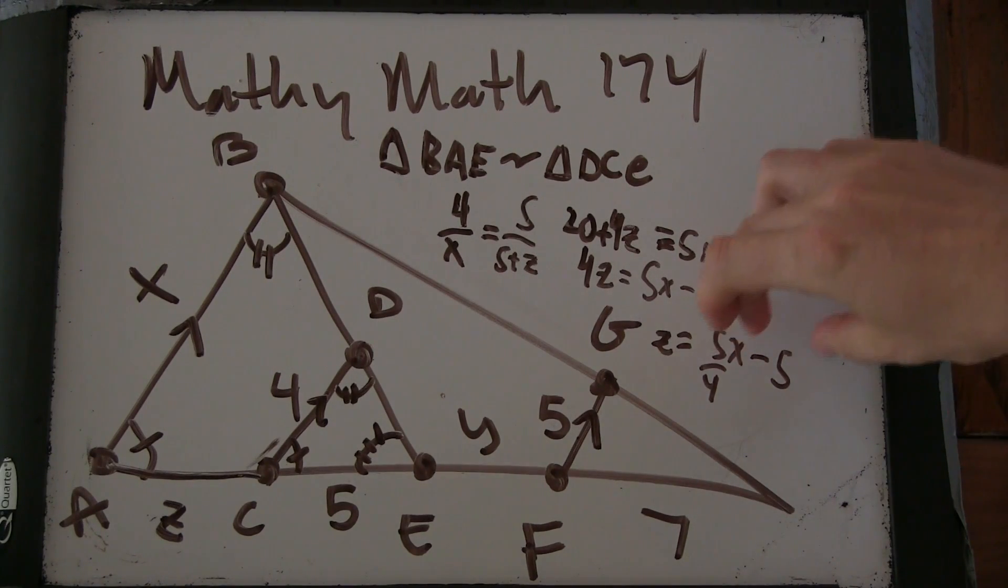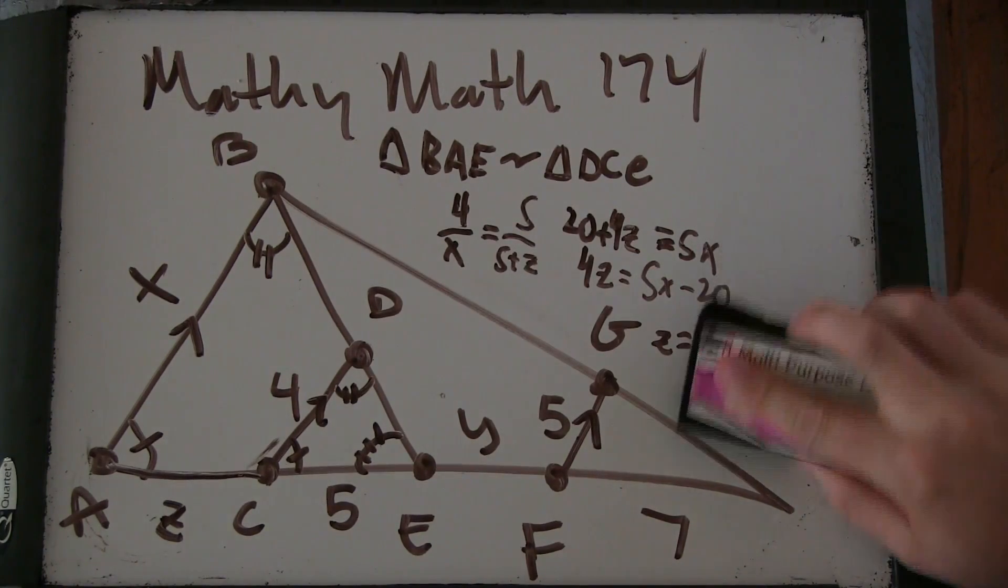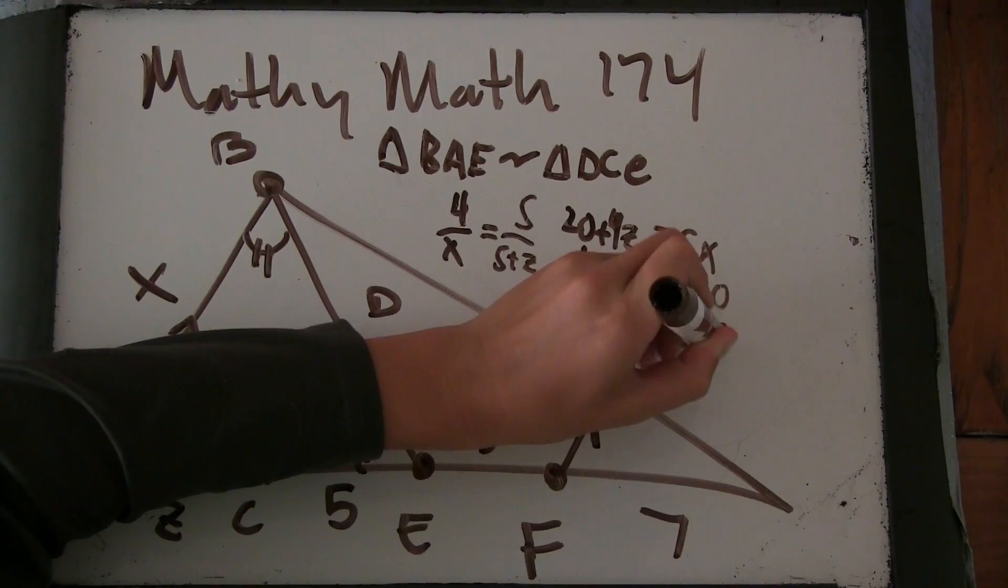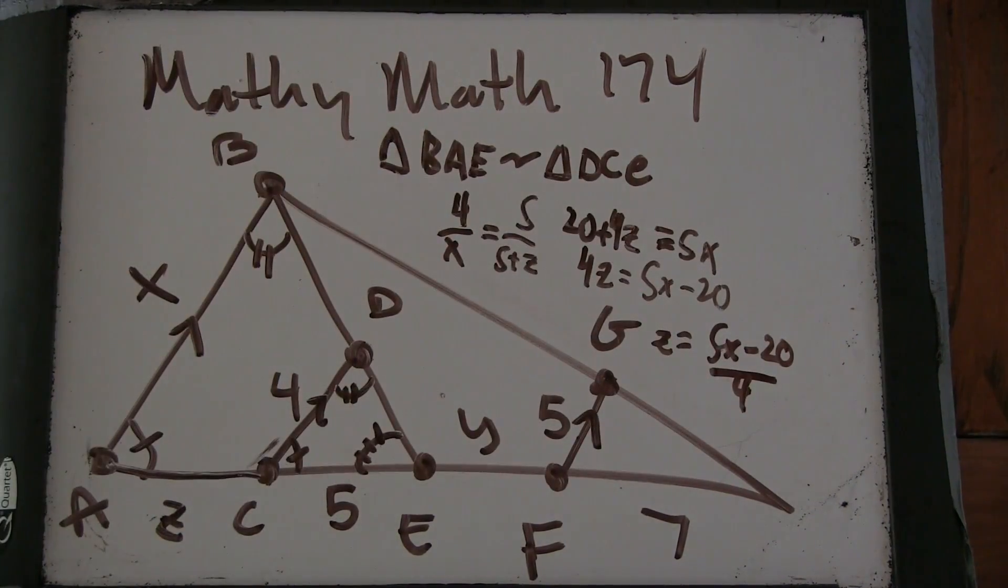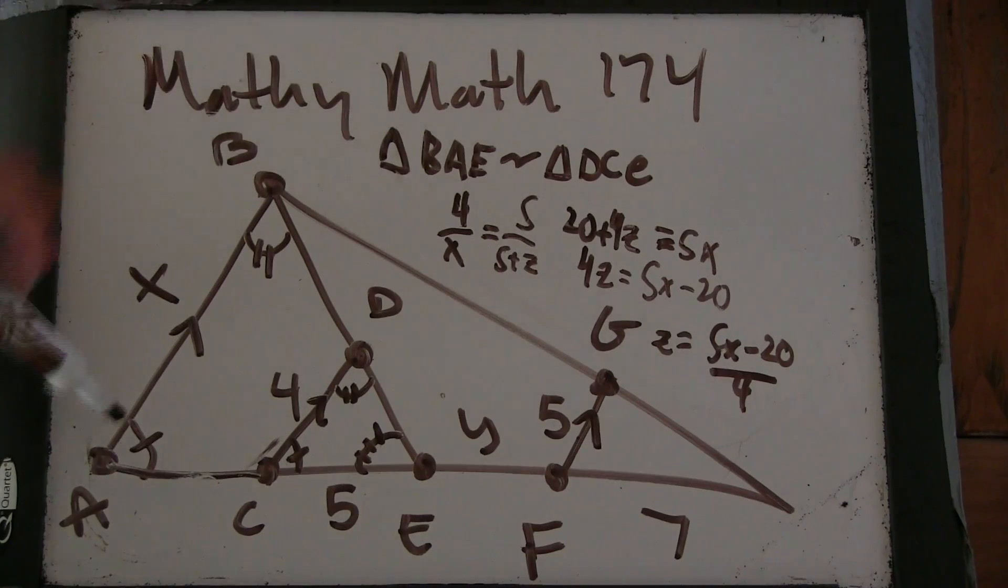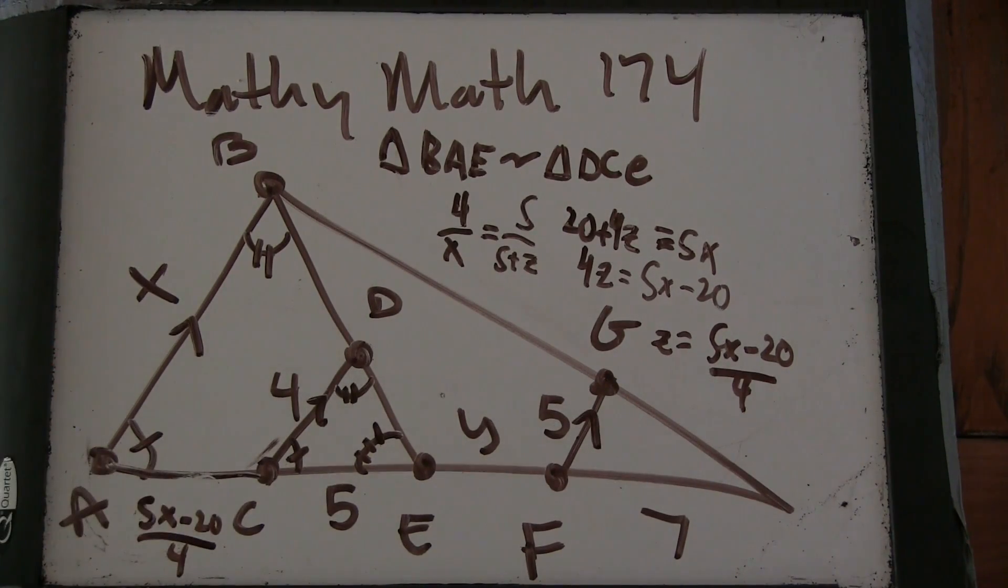That's fine. I would write it as 5X minus 20 over 4. That's a little easier to keep track of. That's probably more just preference than anything else. But 5X minus 20 over 4. So now you know what this is. So you can write that in.